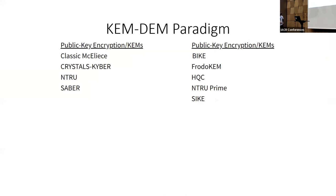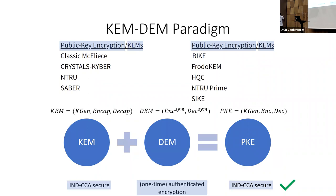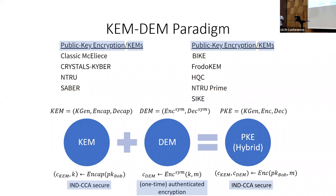All right, let's come back to our NIST candidates. All of these NIST candidates construct their IND-CCA secure PKE schemes by first constructing an IND-CCA secure KEM and then composing it in a standard way with a one-time authenticated encryption scheme, a DEM, to obtain the final PKE. If Alice wants to send a message to Bob, she first runs the asymmetric KEM component to generate a key using Bob's public key, and then this key is used to encrypt the message using the symmetric DEM component. Such PKE schemes are known as hybrid PKE schemes.